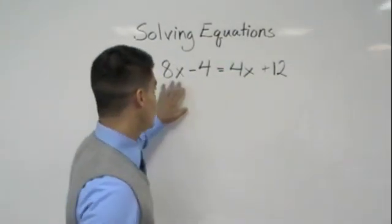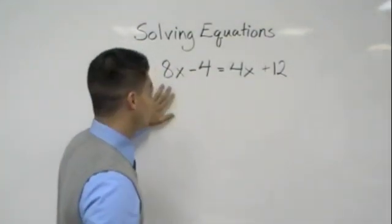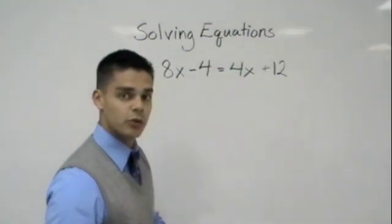For example, here we have an 8x and on the other side we have a 4x. So let's take the 4x over to this side so we can work with positive numbers most of the time.